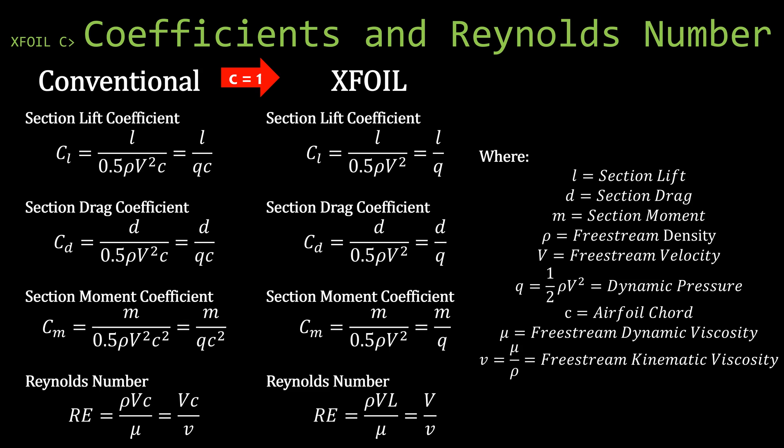So if you see a c-lowercase-l, you're looking at the section lift coefficient. But if you see a C-capital-L, you're looking at a three-dimensional lift coefficient. Unfortunately, this isn't always the case, so just be careful and double check. One of the big differences between a section lift coefficient and a three-dimensional lift coefficient is what is used to normalize the lift value.